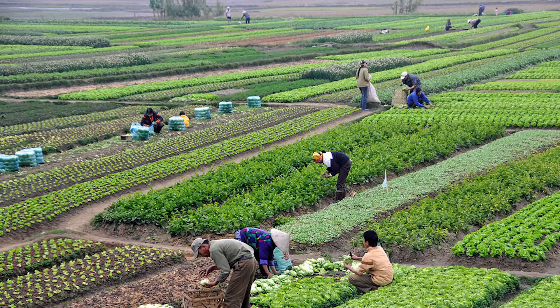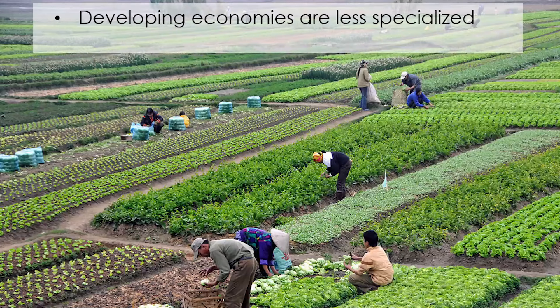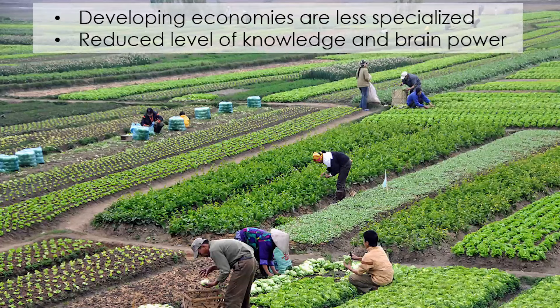Consider this picture of farmers in Vietnam, where 60% of the labor force still works in agriculture. These farmers actually know a lot about farming. The problem is that the knowledge in each one of their heads is very often the same as the knowledge in the heads of the other farmers. One of the reasons that developing economies are poor is that they are less specialized, so they are mobilizing a smaller amount of total combined knowledge. Compare that to a more developed economy, where specialization is much higher and the total amount of combined knowledge is again higher.